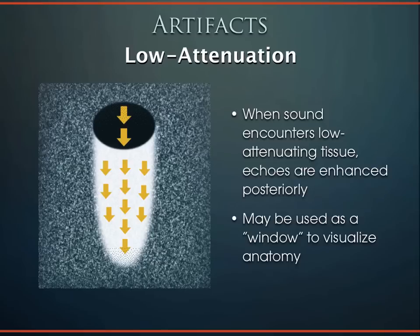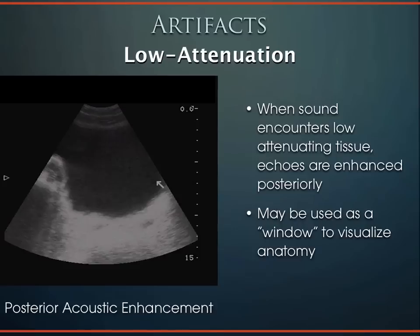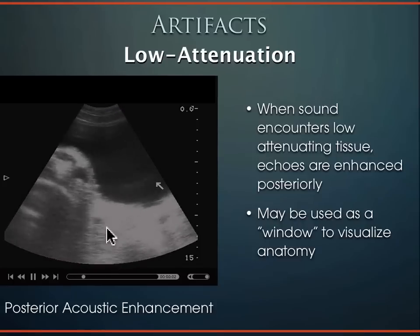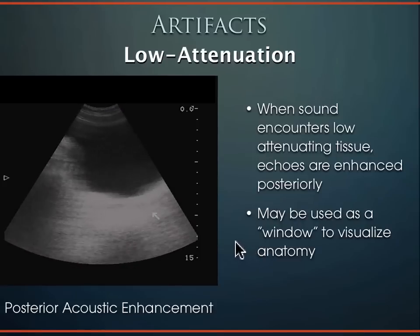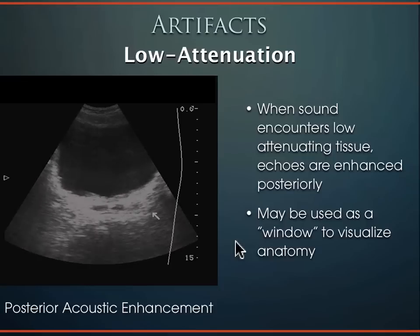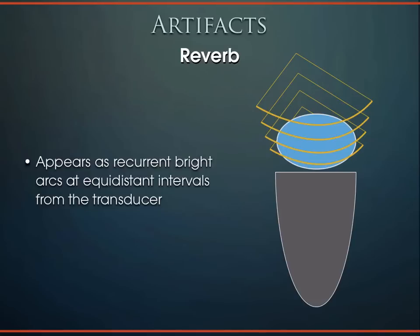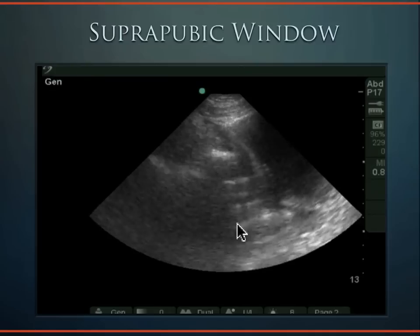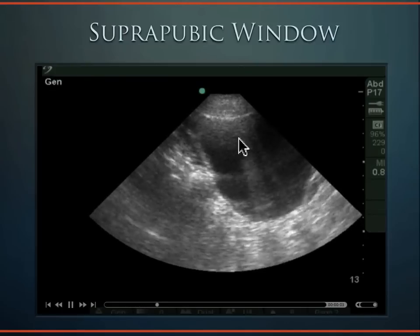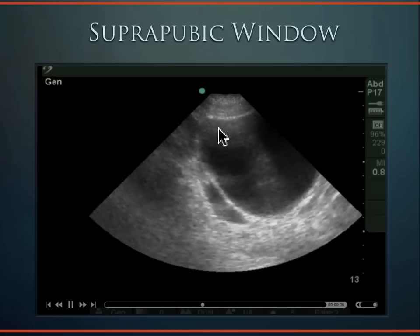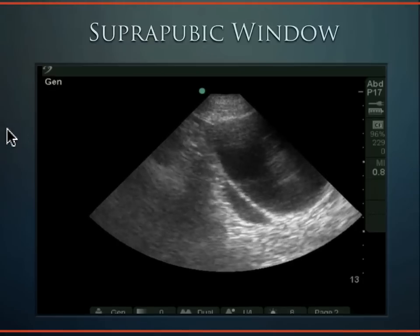Keep in mind the bladder is a low-attenuating structure — sound travels through it easily, speeds up, and everything behind it becomes hyperechoic — posterior acoustic enhancement. This is useful as a window, but you may need to reduce the far-field gain to see structures behind the bladder. Another artifact is reverberation artifact — equidistant bright arcs coming down from the transducer — which we see commonly when imaging the bladder.